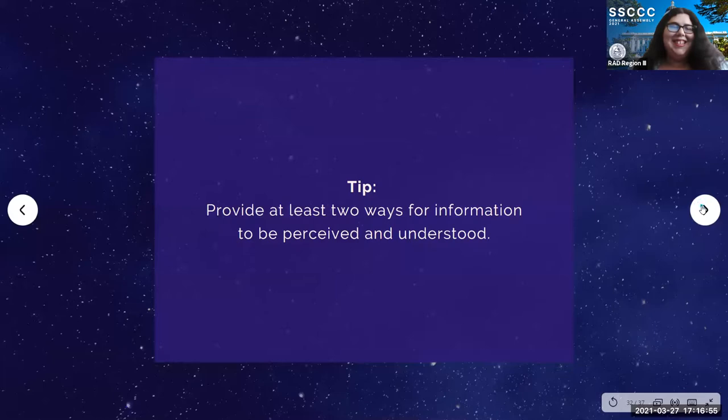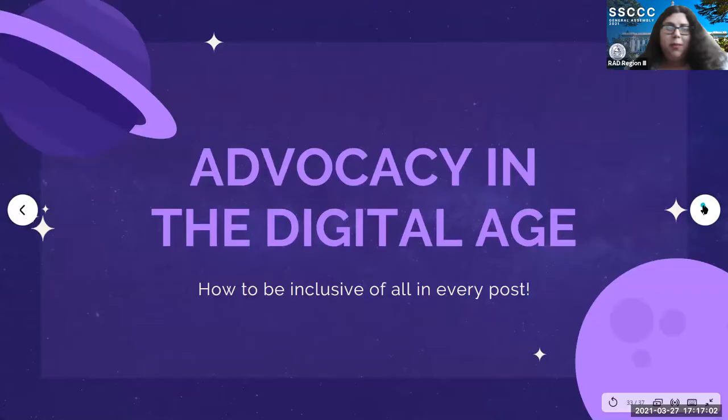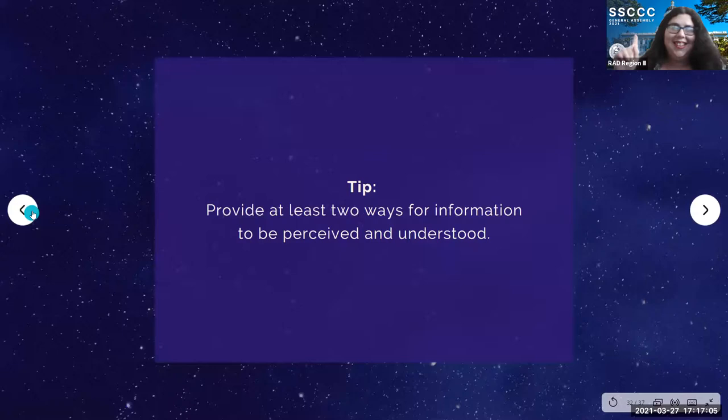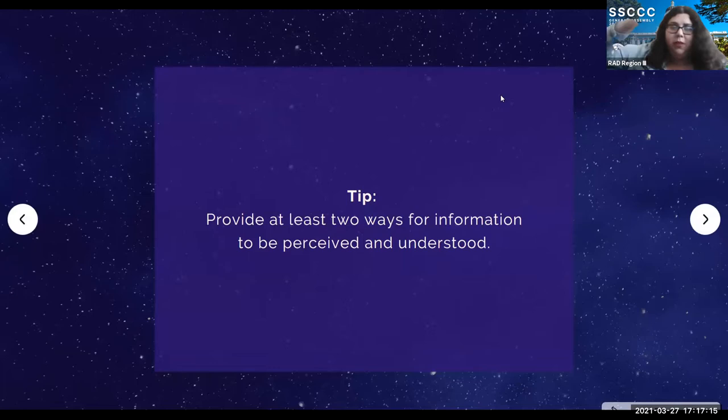In summary, the best tip I can give you — if you can take away one thing from this — is make sure that in everything you post and every method of outreach to your community, you provide at least two different ways for information to be perceived or understood, so that you're able to address as many needs as you can for students in your community.